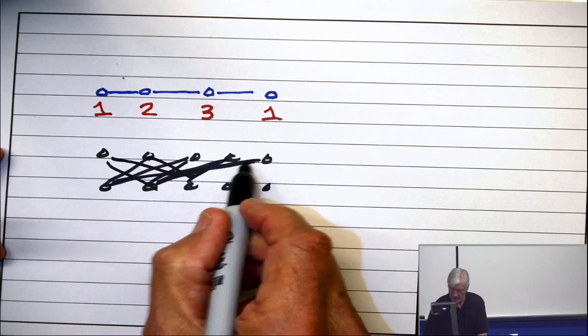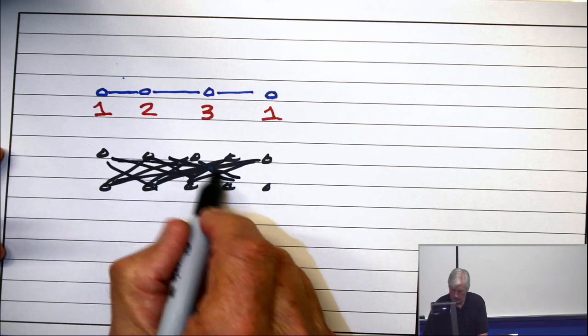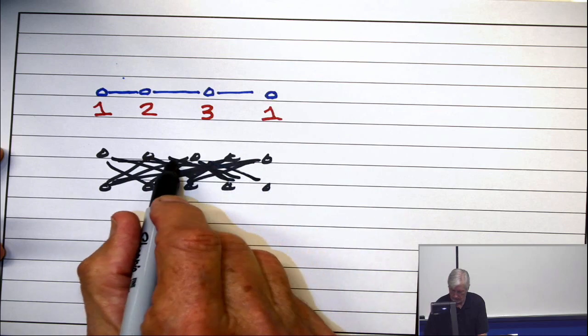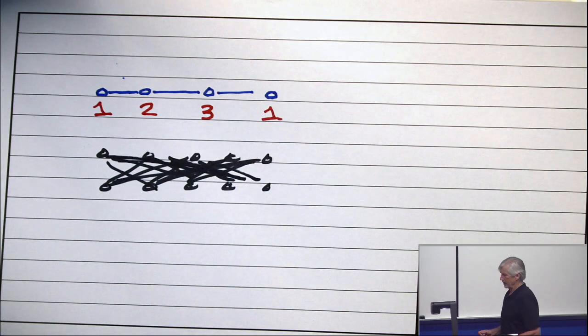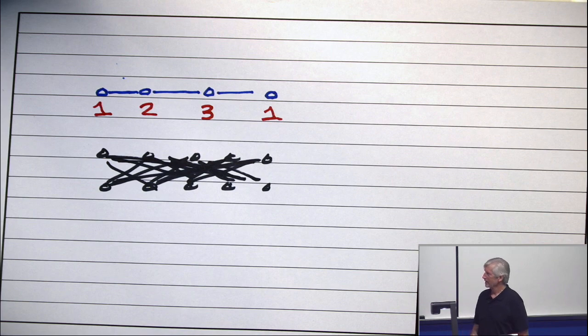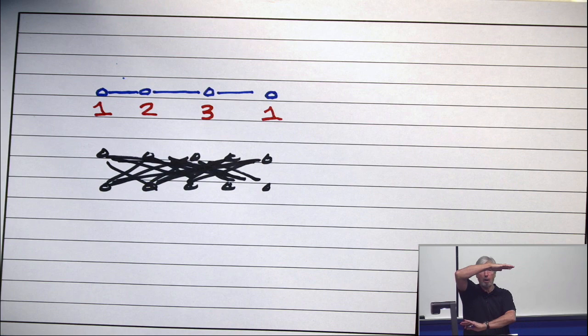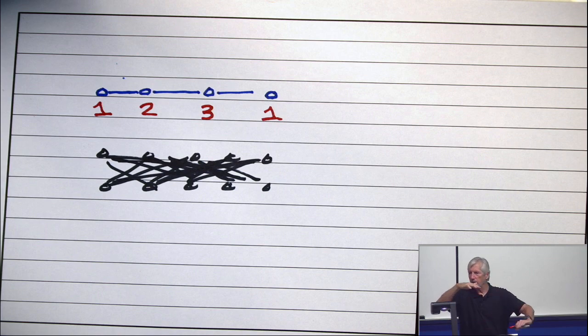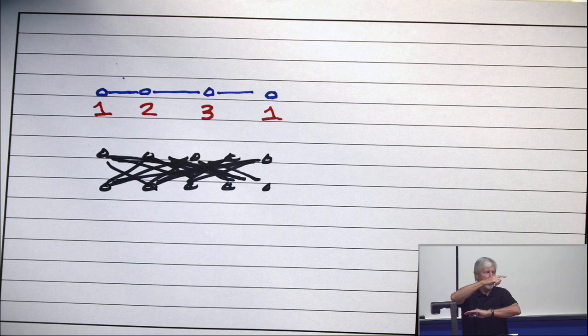It's a complete bipartite graph minus a matching. I know that's a mess. And that's why defining a graph is rarely done with a picture. What I intend here is that I have n vertices on bottom, n vertices on top. There are no edges up here. There are no edges down here. That makes it a bipartite graph.